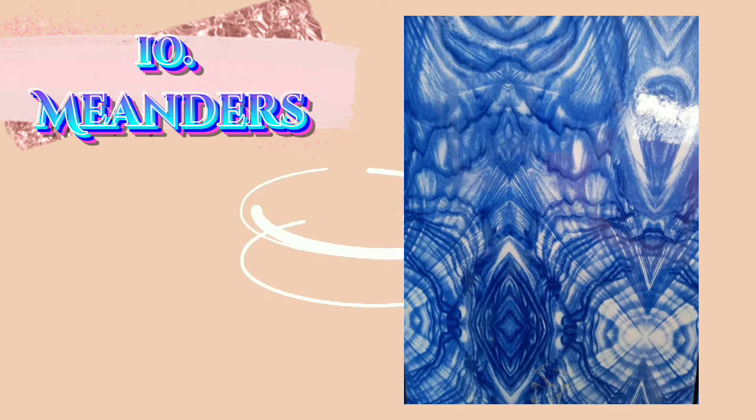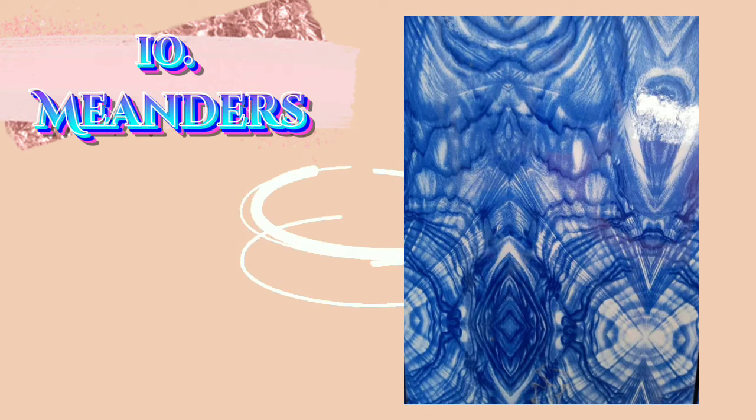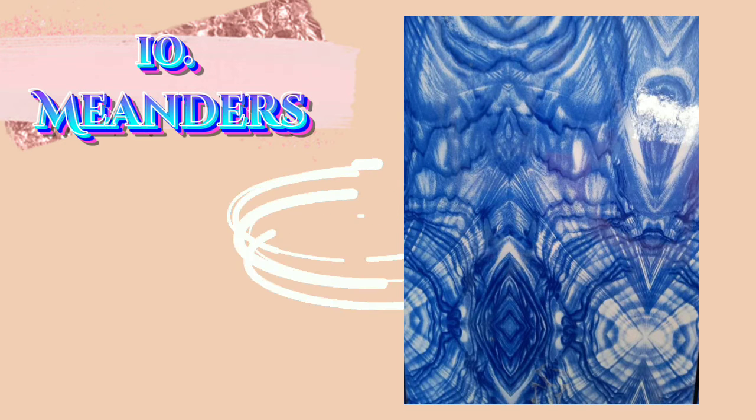And lastly, the meander pattern. A meander pattern includes a series of regular sinuous curves, bends, loops, turns, or windings in the channel of a river, stream, or other watercourse. When a river shifts its channel within a valley or swings from side to side as it flows across its floodplain, it produces a meander pattern.